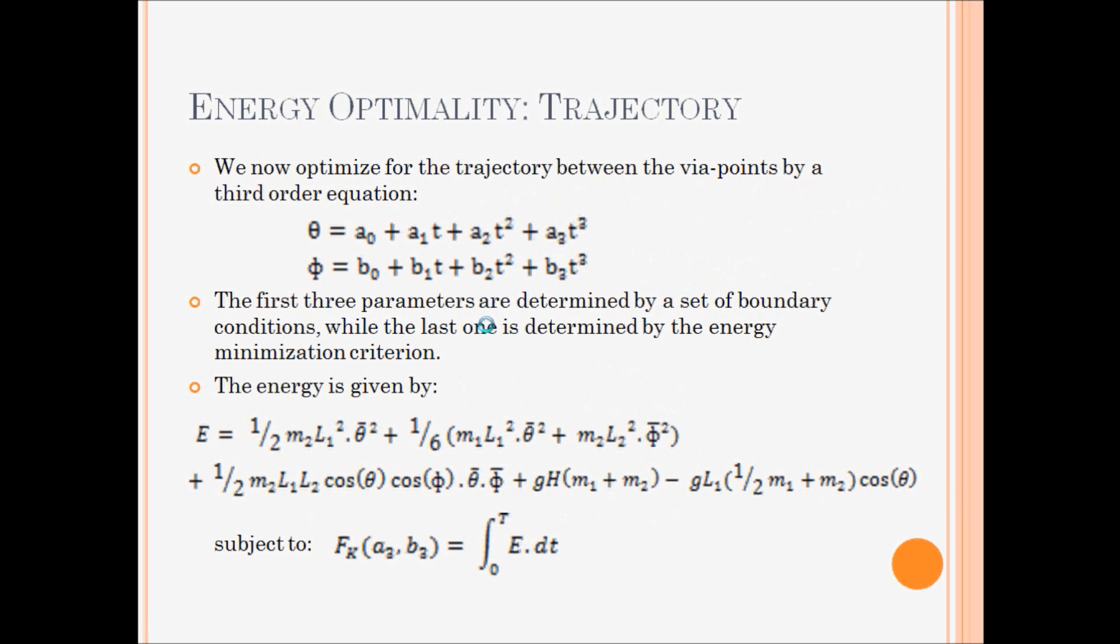So now once we have these waypoints, we can now optimize for the energy. In between two waypoints, we fix the trajectory by considering third order polynomials like this. These are polynomials in time and each of these has four parameters. The first three parameters are determined by a set of boundary conditions.